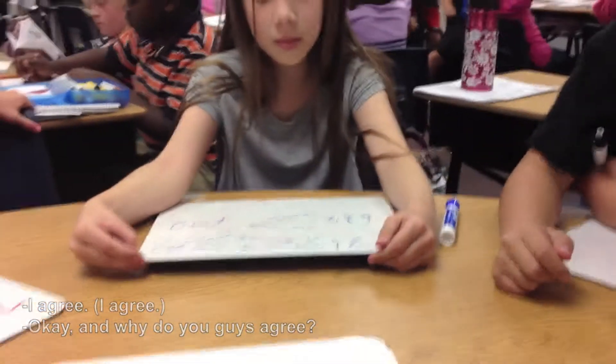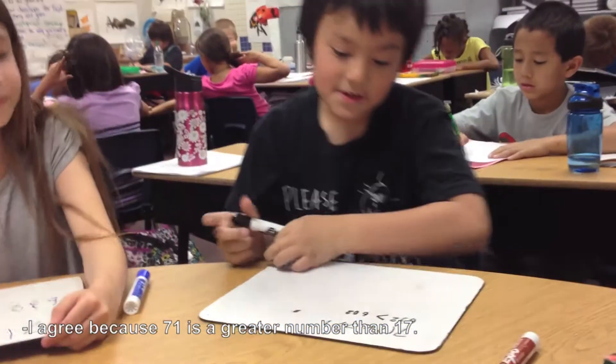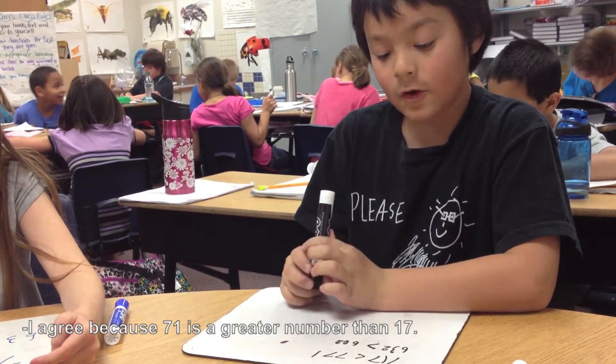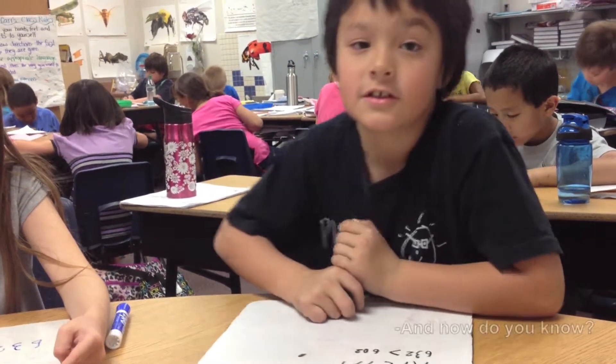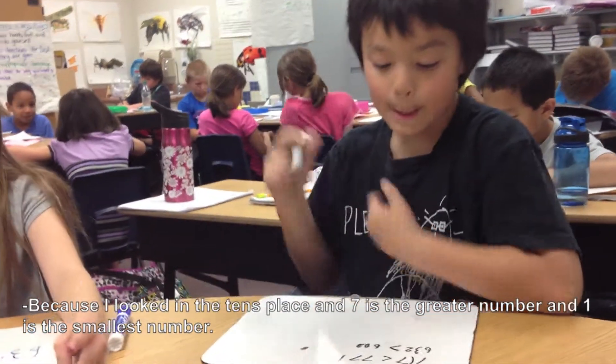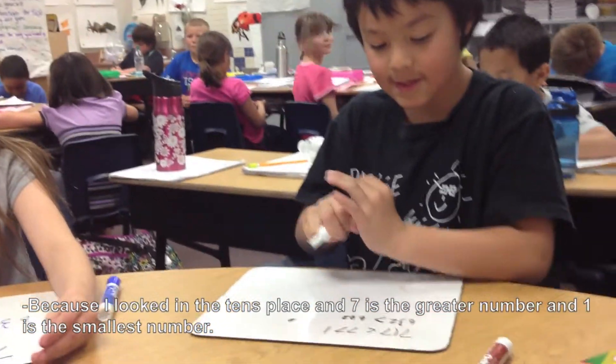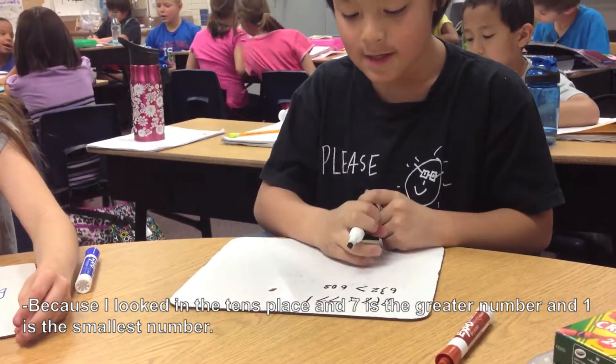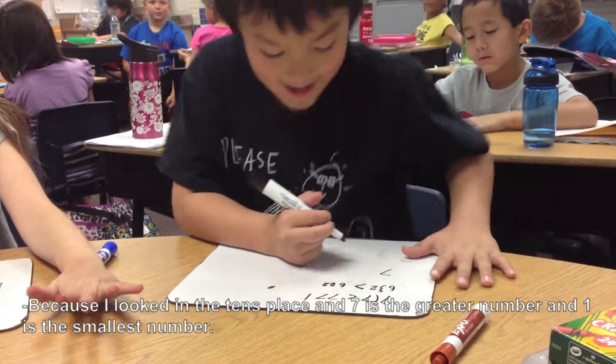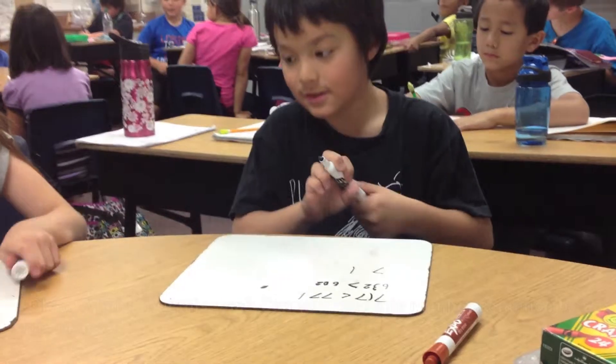Okay, and why do you guys agree? I agree because 71 is a greater number than 17. And how do you know? Because I looked in the tens place and 7 is the greater number and 1 is the smallest.